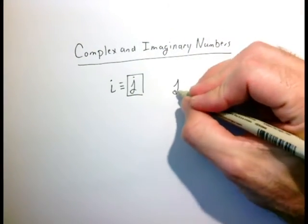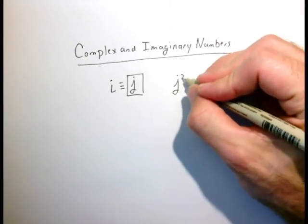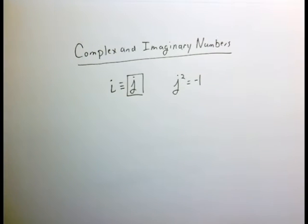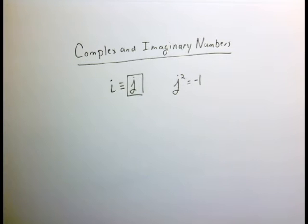The definition of j is that j squared is equal to minus 1, or you could say that j is equal to the square root of minus 1. This might seem a little weird at first if you haven't seen this before, because you may have thought that the square root of negative numbers is ill-defined or strange. But we'll see it's nothing strange at all, and it's actually quite useful.